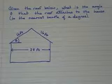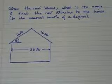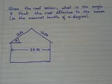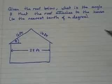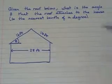Given the roof below, what is the angle theta that the roof attaches to the house to the nearest tenth of a degree? The first thing you have to realize from the picture is you can turn this into a triangle.